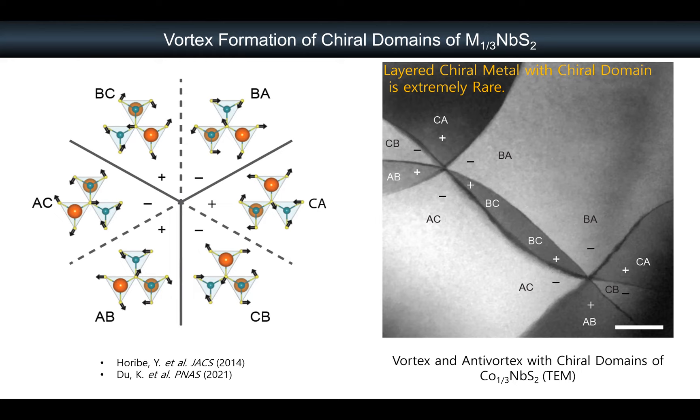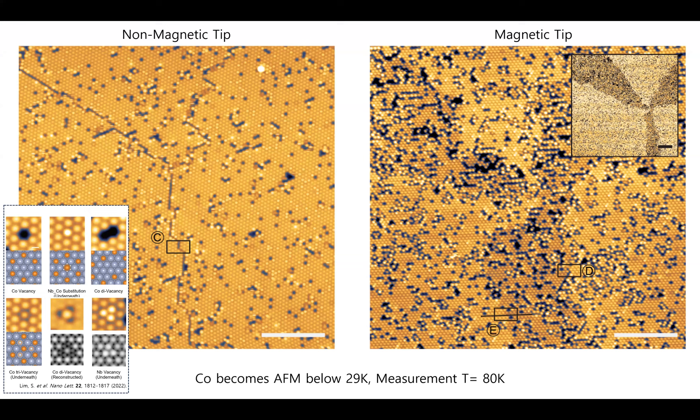Here are the results comparing two measurements. On the left side, using a non-magnetic tip; on the right side, using a magnetic tip. First, you will see a lot of defects — although we try our best to make the best quality crystal, under STM we still see many defects. If you are interested in these atomic-scale defects, please refer to our previous results.